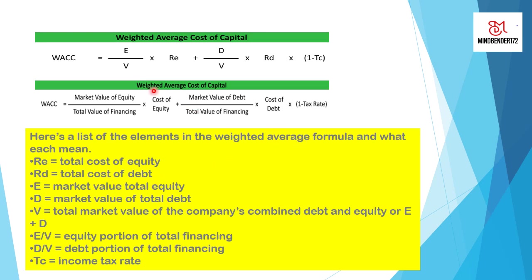Let's discuss this through formula. WACC is equal to the market value of equity divided by the total value of financing, multiplied by the cost of equity, plus market value of the debt divided by the total value of financing, multiplied by cost of debt multiplied by 1 minus tax rate. These formula symbols are here.